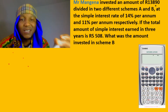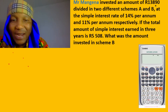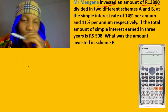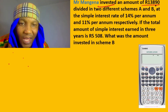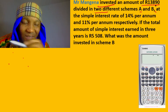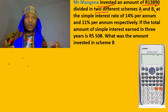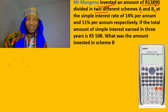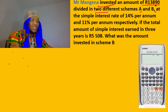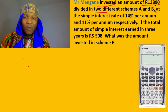Let's say Mr. Mangana invested a certain amount of money. He said 'I'm playing clever right now' because he invested an amount of 13,890. But he divided it into two different schemes - maybe he didn't want to take the risk of putting all the money into one investment.